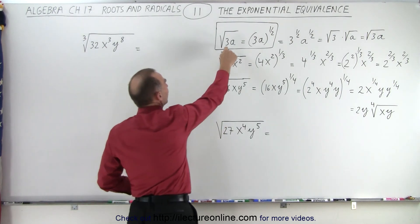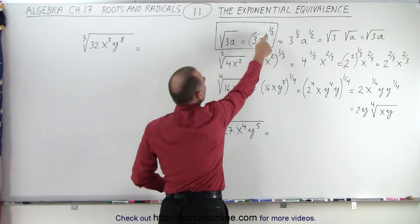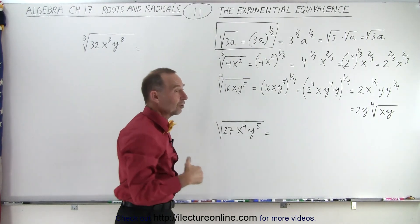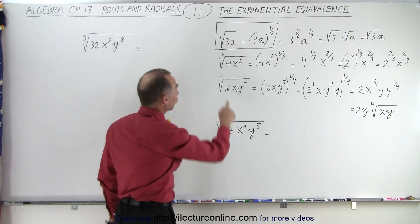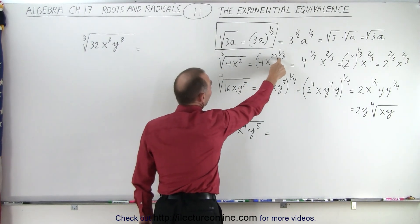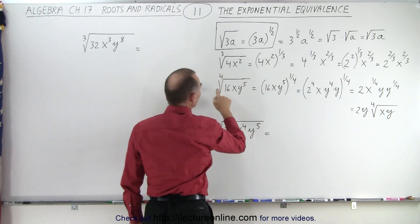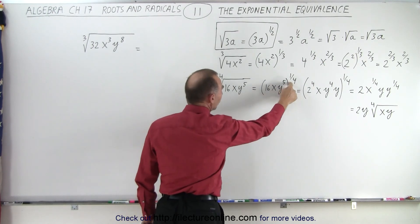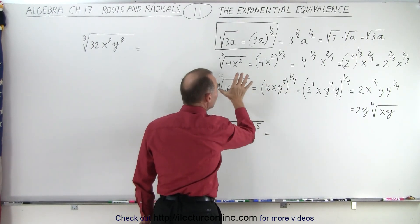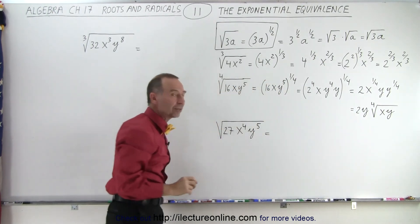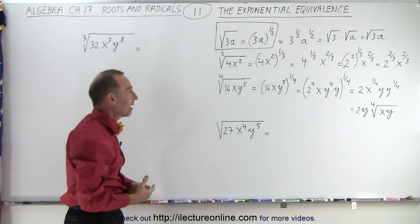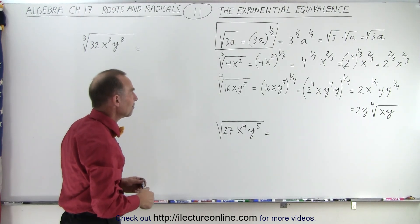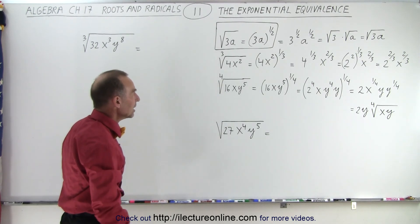We can use a radical symbol, or we can use fractional exponents. The same applies when we have the cube root — we can use one-third — or the fourth root, we can use one-fourth instead of using the radical sign, and it's exactly the same thing. It has the exact same mathematical meaning.